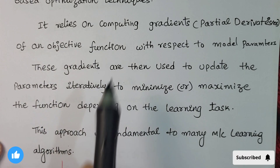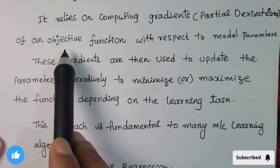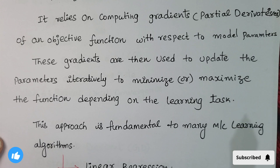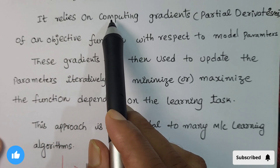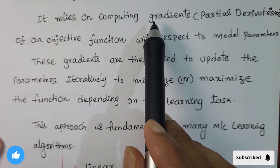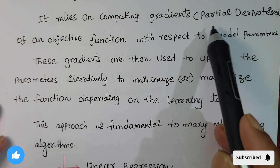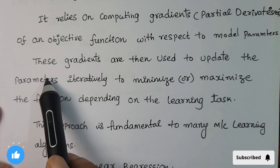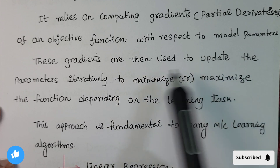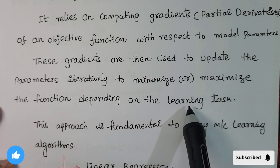Gradient-based learning relies on computing gradients — partial derivatives of an objective function with respect to the model parameters. These gradients are then used to update the parameters iteratively to minimize or maximize the function, depending on the learning task.